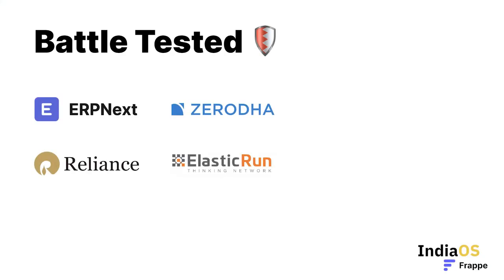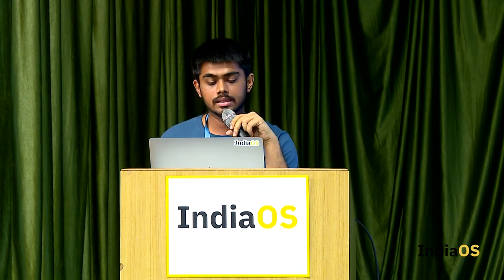ERPNext is built on top of Frappe. Zerodha uses it extensively. Reliance has been experimenting with ERPNext — and by extension also Frappe. Elastic Run is an amazing team from Pune which extensively uses both ERPNext and Frappe.